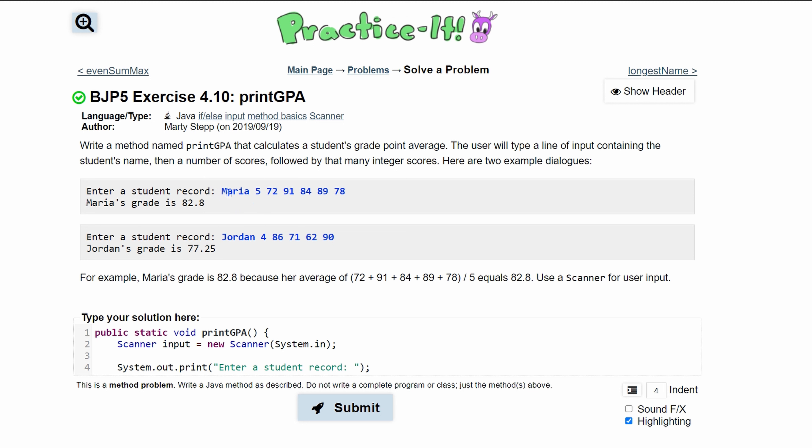Now the user is first going to input a name, so that's what we're going to store. We're going to make a String called name and set it equal to input.next. That's going to get us the next thing, which should be the name.